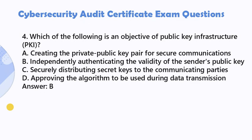Question 4. Which of the following is an objective of public key infrastructure (PKI)? A. Creating the private-public key pair for secure communications. B. Independently authenticating the validity of the sender's public key. C. Securely distributing secret keys to the communicating parties. D. Approving the algorithm to be used during data transmission. Answer: B.